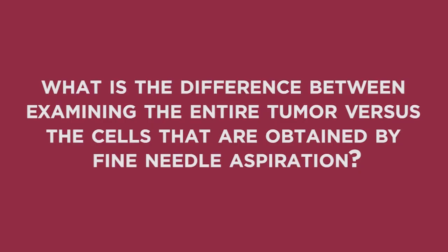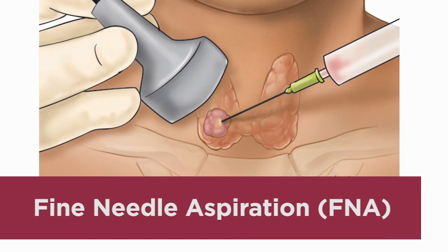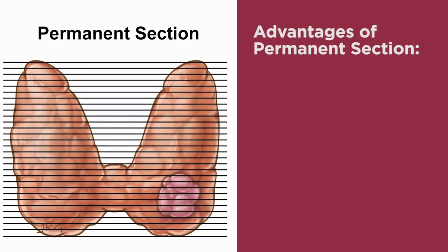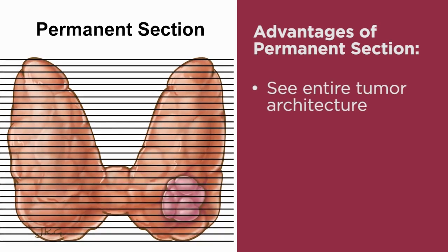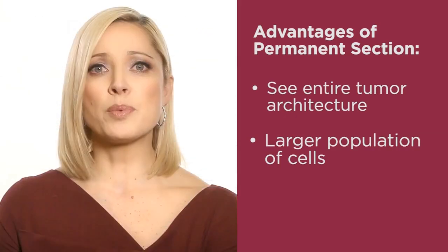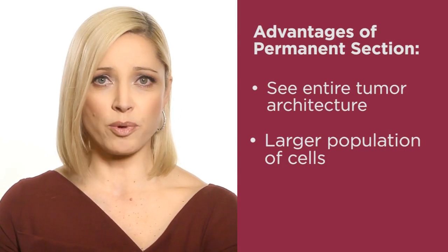In a fine needle aspiration biopsy, a needle is inserted into the growth and either individual cells or clusters of cells are drawn up into the needle and syringe. The cells are then placed onto a glass slide and examined under the microscope. In a frozen section performed during surgery, as well as the final pathology assessment, the tumor is cut into sections so that the entire architecture of the tumor can be examined. This also provides an opportunity to examine a much larger population of cells that cannot be accomplished in the fine needle aspiration biopsy.